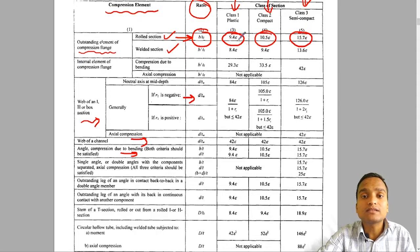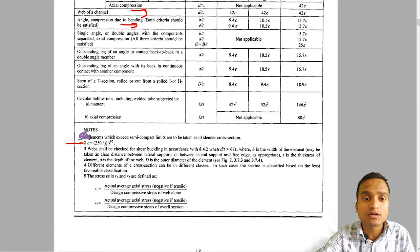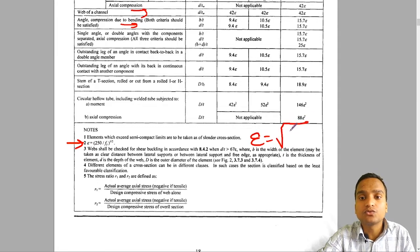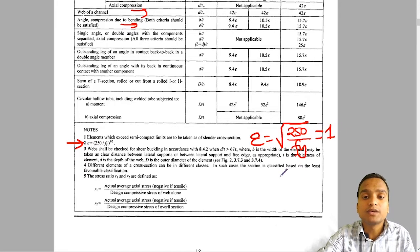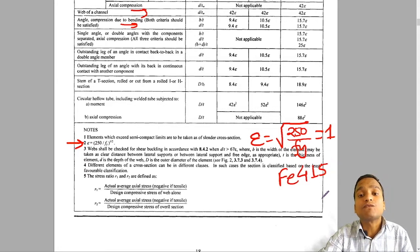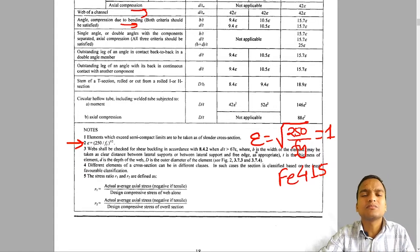The parameter epsilon in the table is given as epsilon = √(250/Fy). Most of the time epsilon equals 1 when Fe250 steel is used because Fy = 250 MPa. So epsilon is most often ignored in calculations.